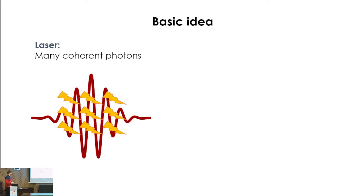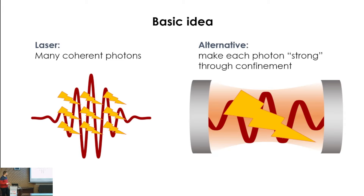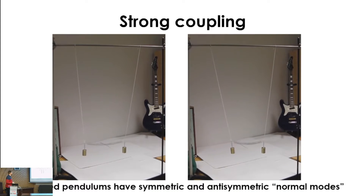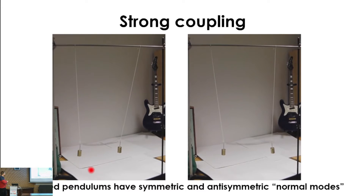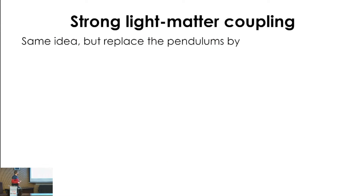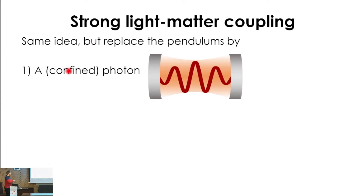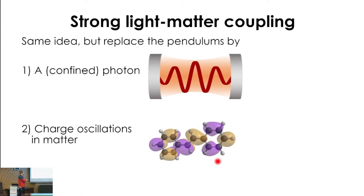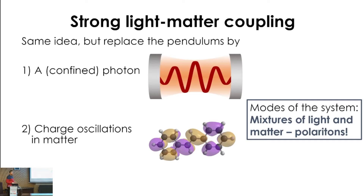Everyone is familiar with using lasers to modify materials, where many coherent photons work together to give a significant effect. The alternative is to instead make the interaction of each single photon with the system strong, which I can achieve by confining the photons. The basic effect we use is just normal mode coupling — if I couple two oscillators I get new modes, the symmetric and anti-symmetric oscillations at different frequencies, rather than the same modes as when each oscillator is alone. Strong light-matter coupling is really the same idea but using a photon in the cavity and charge oscillations in matter.